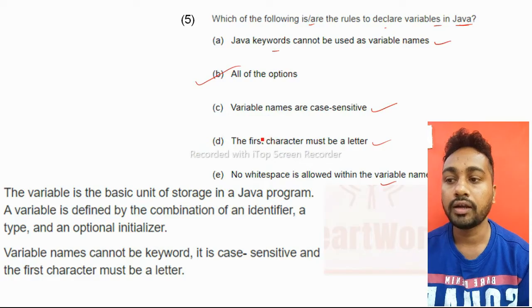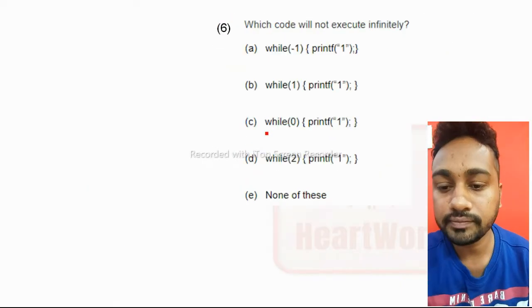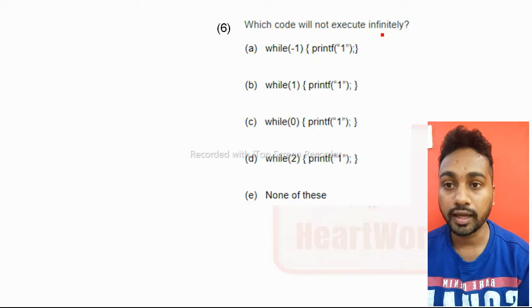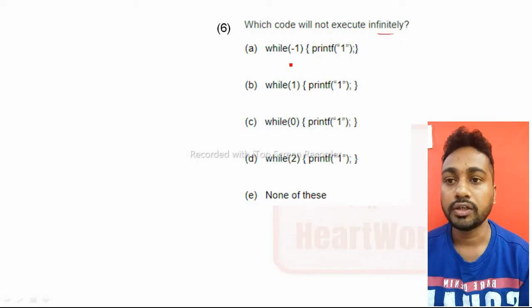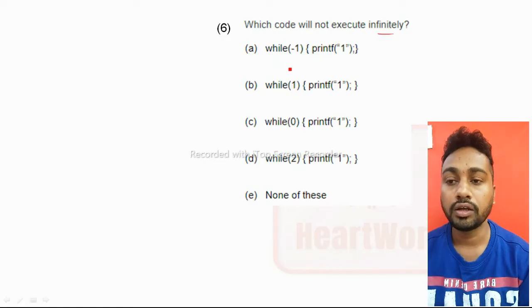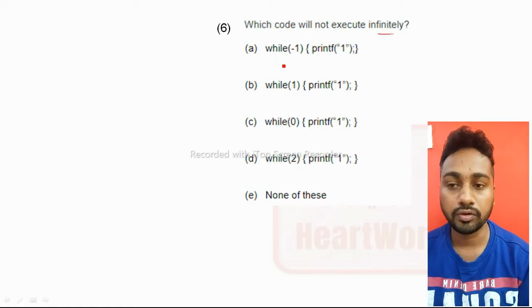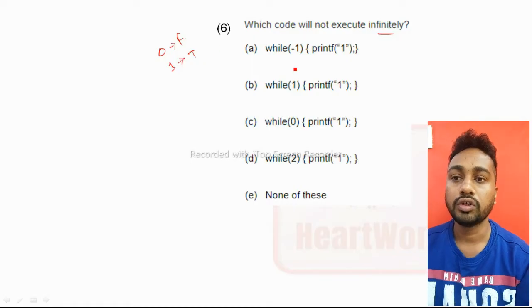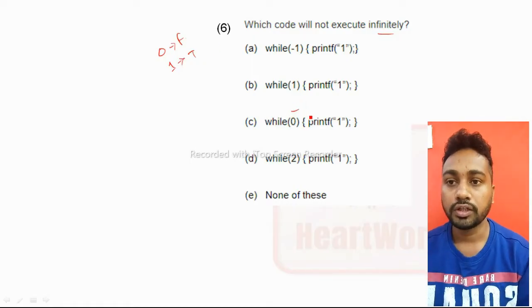Which code will not execute infinitely? While statement - if you go for while programming in any programming code like C, C++, Java, zero means what? Zero means false value. One and other things is like true value. Whenever you will go for false value, that time only it will not execute infinity time.